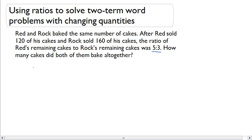The question asks how many cakes did both of them bake together. So the total number of cakes has to be equal to what Red sold plus what Rock sold plus what Red has remaining.